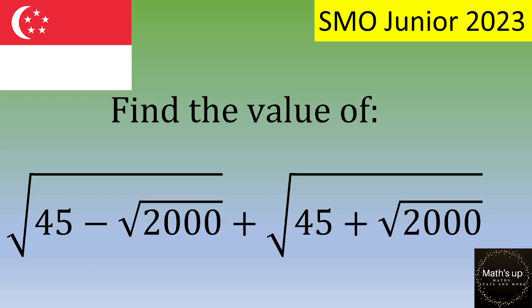Hello and welcome. In this video, we'll solve an exercise from the Singapore Mathematical Olympiad Junior 2023. You would like to find the value of the square root of 45 minus square root of 2000 plus the square root of 45 plus square root of 2000.